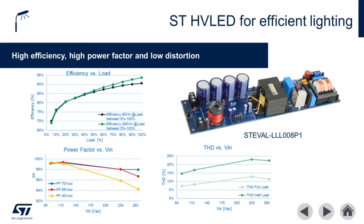The HVLED001B and HVLED002 deliver high efficiency, high power factor, and low distortion power conversion from the AC mains through the primary and secondary conversion to the LED string. This power conversion solution is available in an easy to use evaluation board, ST EVAL LL008P1, and it's compatible with a wide input voltage range from 90 volts to 260 volts AC.